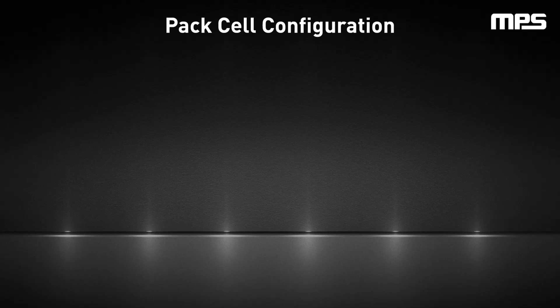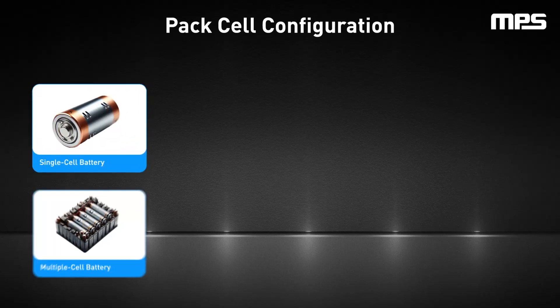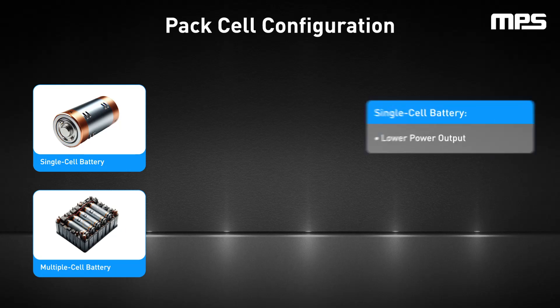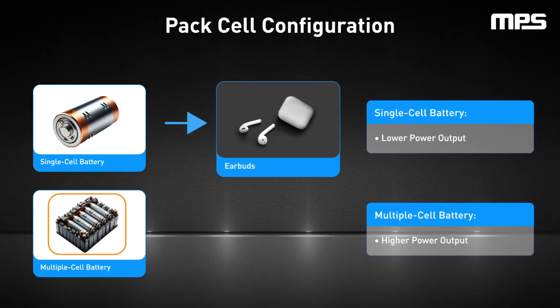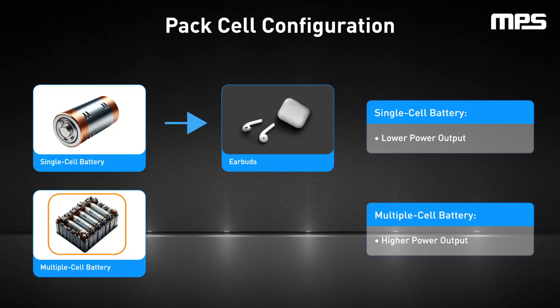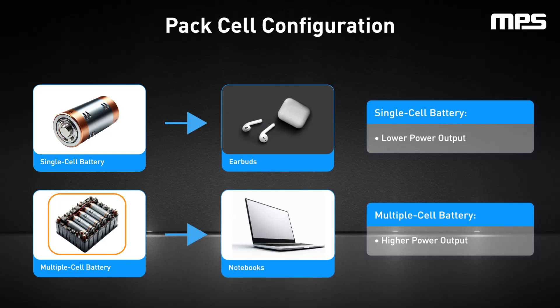Next, let's dive into battery pack cell configurations. Chargers can be broadly categorized for single-cell or multiple-cell batteries. These values correspond to the number of cells physically placed in series inside of the battery pack, as well as the charger's output voltage range. Single-cell batteries, with their lower power output, are often found in compact devices like phones and headphones. In contrast, multiple-cell batteries power larger devices, offering significantly more charge.